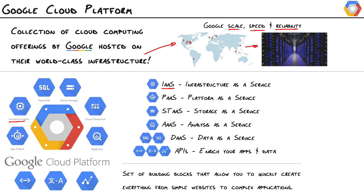We also get App Engine, which is Google's platform as a service. It's a really powerful and scalable application development environment. This is what allows developers to simply focus on writing code — they don't have to worry about the infrastructure that is going to host their application.